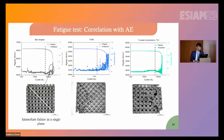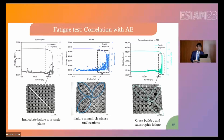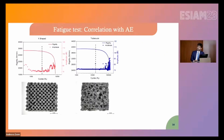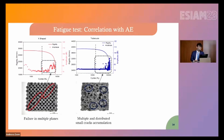For the star shape and TCO specimens, acoustic emission events are concentrated just before the final collapse. For the other topologies, acoustic emission events are more spread out, reflecting failure in multiple planes and locations of the lattice. A similar distributed behavior was also observed in the bending-dominated lattices, in which failure occurs in multiple planes or locations with many acoustic emission events distributed throughout the fatigue life.